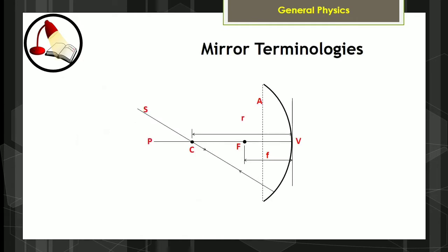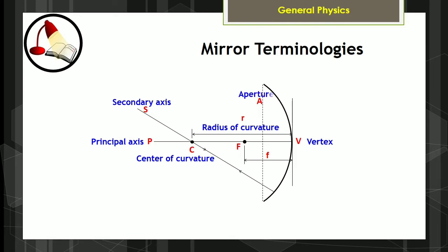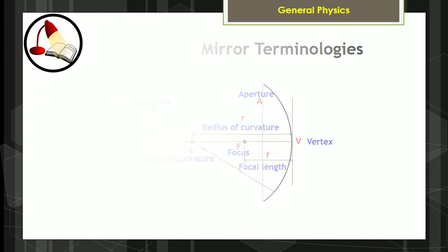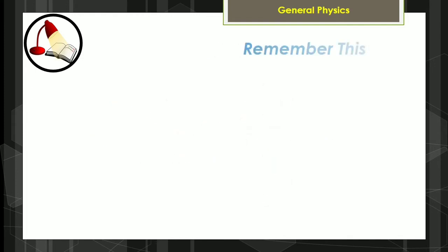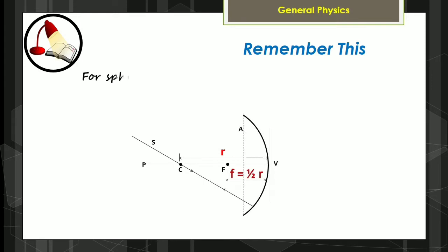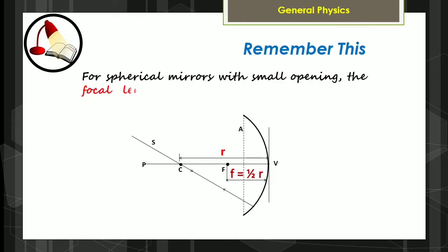Now let us label the spherical mirror based on the given mirror terminologies. For spherical mirrors with a small opening, the focal length f is one half the radius of curvature.